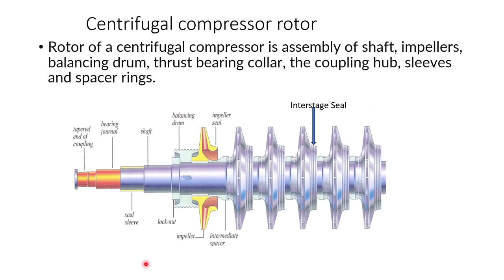Now let us see the rotor of a centrifugal compressor. This is the shaft, and this is the coupling. The radial bearing and shaft seal are located here. This is the balancing drum and these are the impeller seals. Each impeller has a spacer to accommodate the diffuser. There is also an inter-stage labyrinth sealing to prevent gas from leaking from the discharge of one stage to the suction of the next.